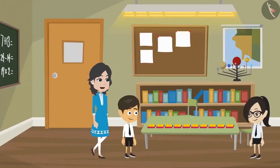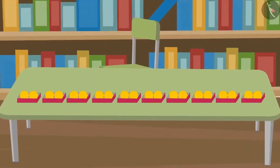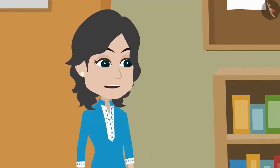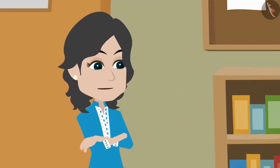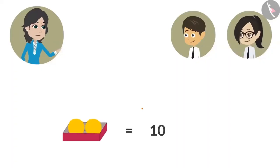Reyanch and Vandana, what are you counting? Madam, there are two ladoos in each of these boxes. We are trying to find the total number of ladoos in these boxes. That is very easy. Now Vandana, tell me how many boxes of ladoos are there? We have a total of 10 boxes. That means you have a total of 20 ladoos.